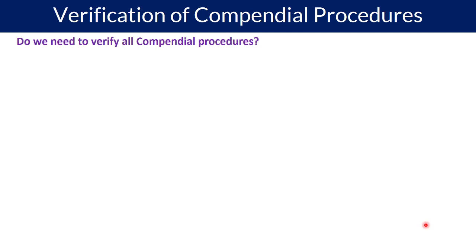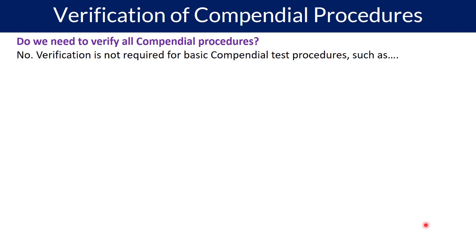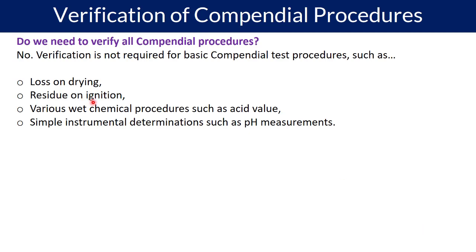Do we need to verify all compendial procedures? You are not only using identification, impurity, or assay procedures — there are several others such as pH measurement and loss on drying. According to USP General Chapter 1226, verification is not required for basic compendial test procedures. Examples include: loss on drying, residue on ignition, various wet chemical procedures such as acid value, and simple instrumental determinations such as pH meters.